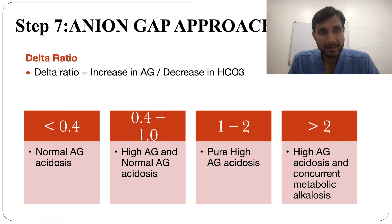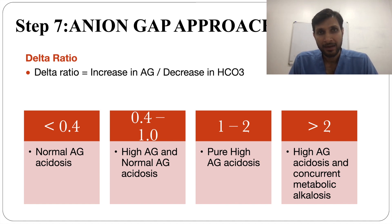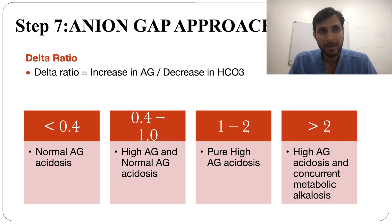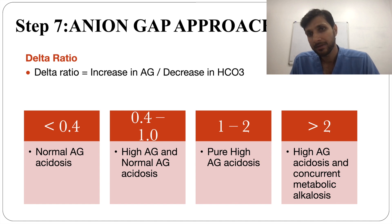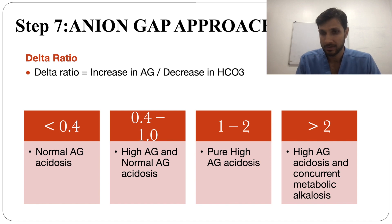Step 7 is the delta ratio, calculated as the increase in anion gap divided by the decrease in bicarbonate, to assess whether the rise in anion gap is matched by the fall in bicarbonate. A value less than 0.4 indicates normal anion gap acidosis; 0.4 to 1 indicates a combination of high and normal anion gap acidosis; 1 to 2 is pure high anion gap acidosis; and greater than 2 indicates high anion gap acidosis with concurrent metabolic alkalosis.